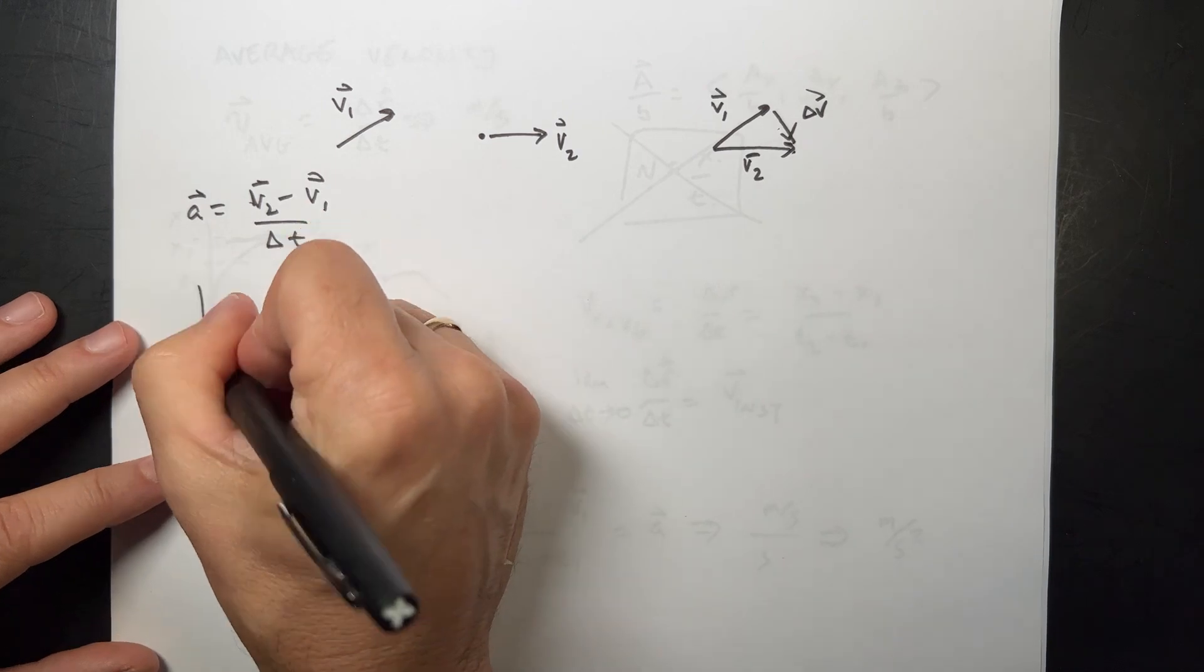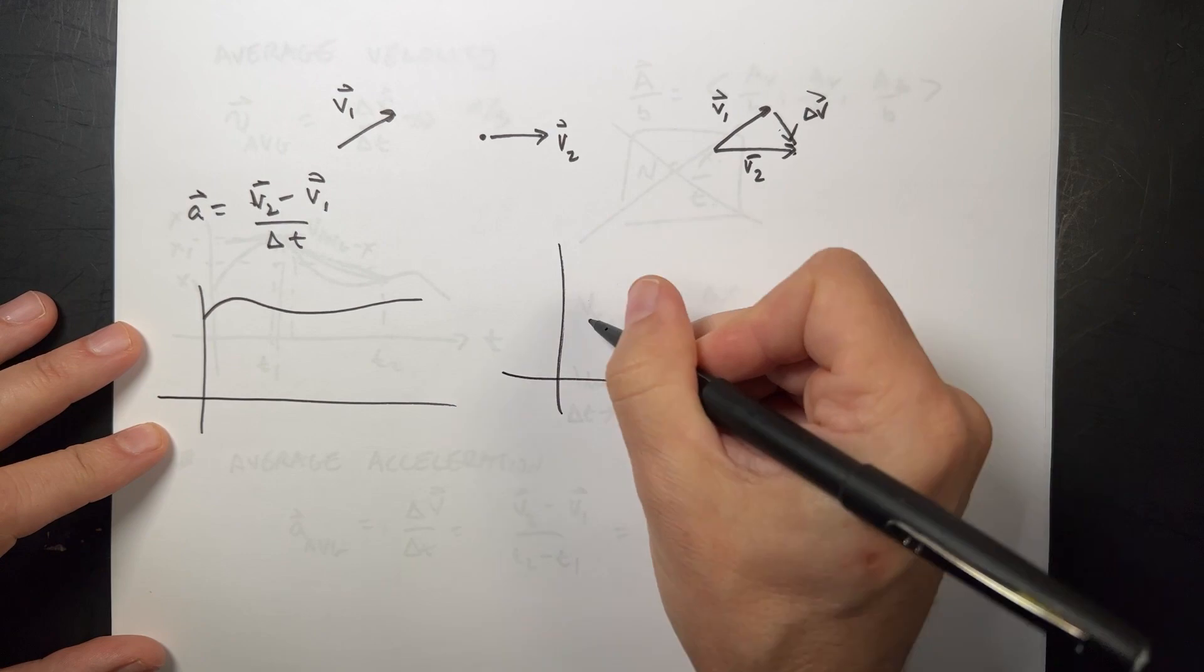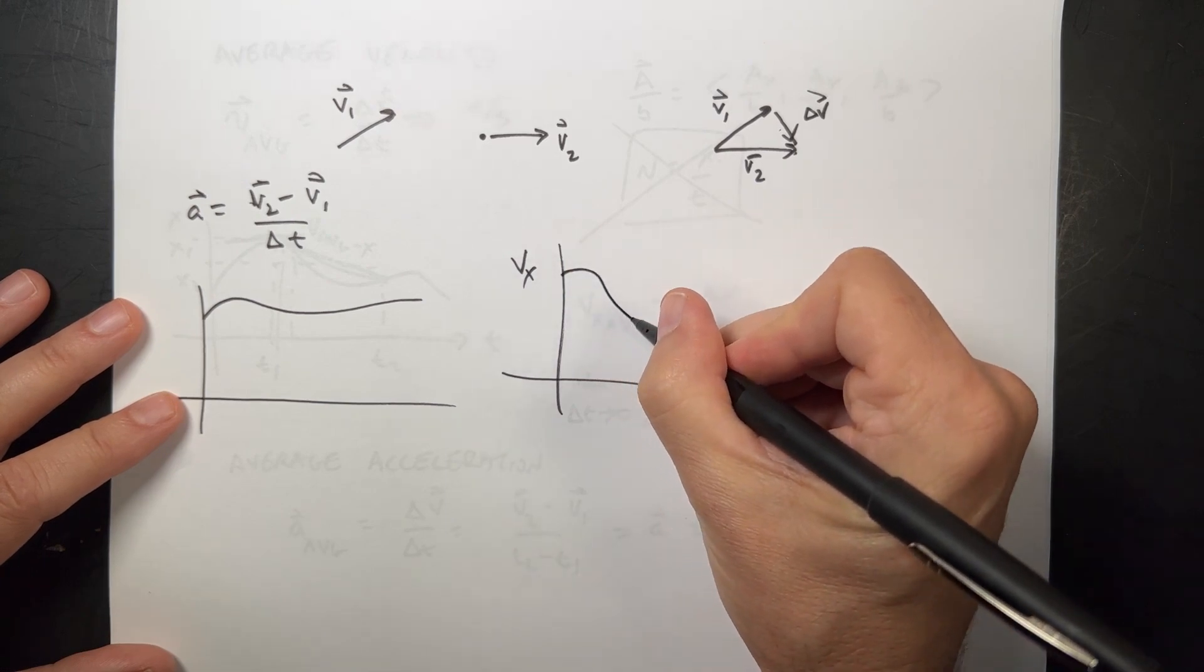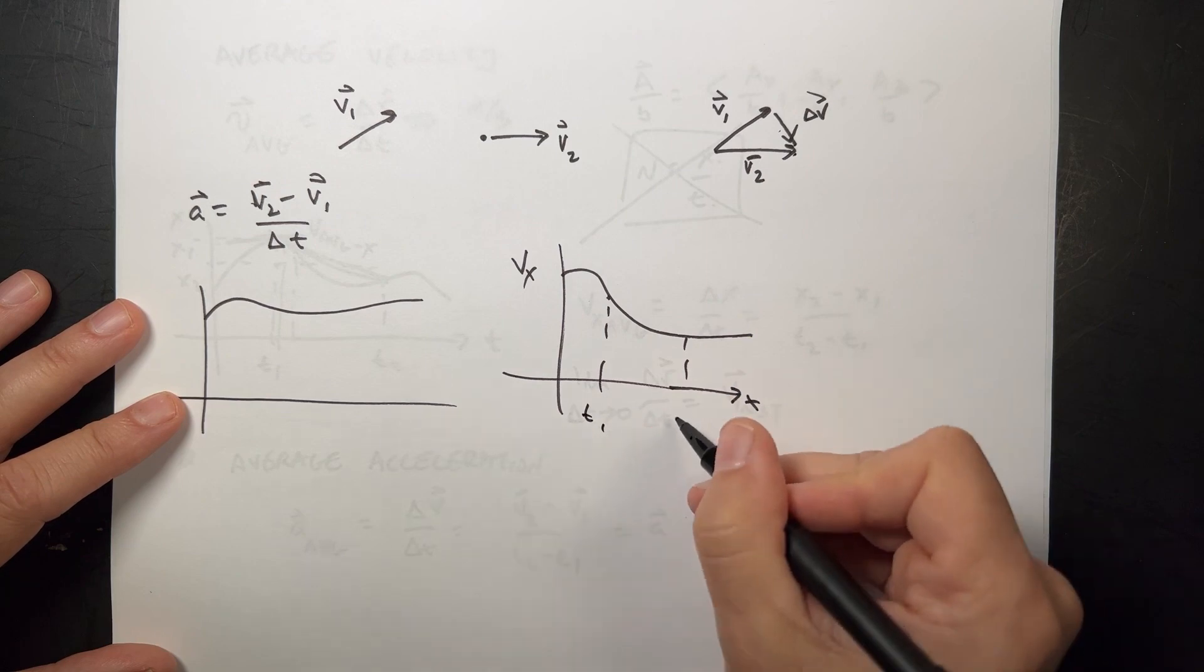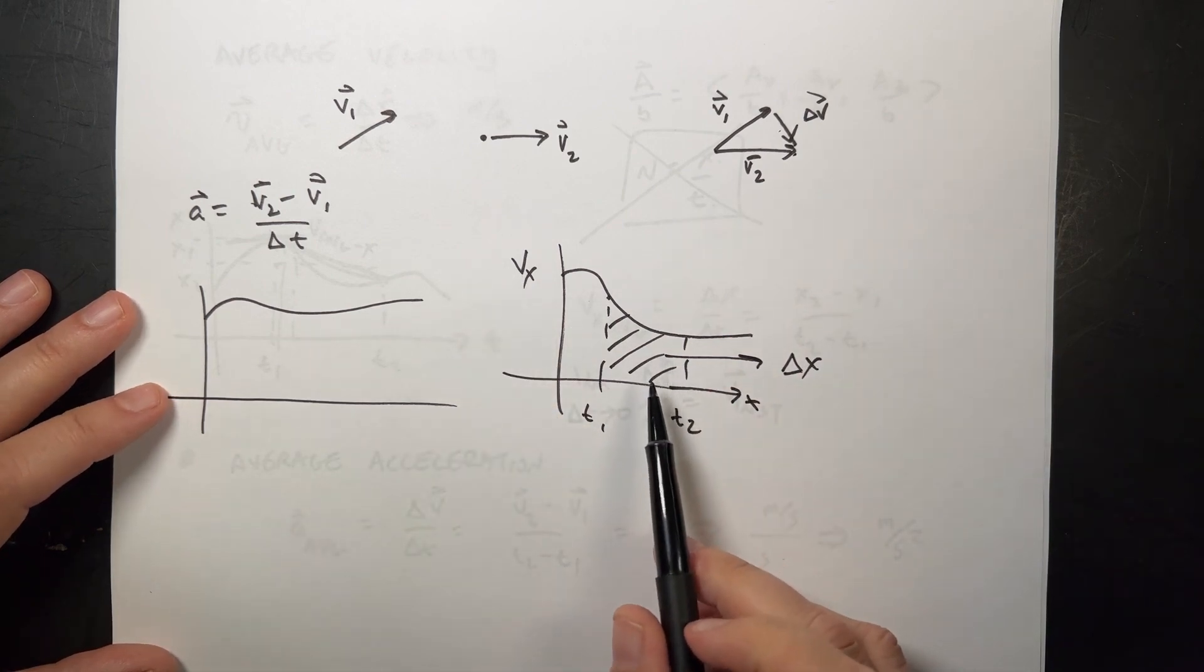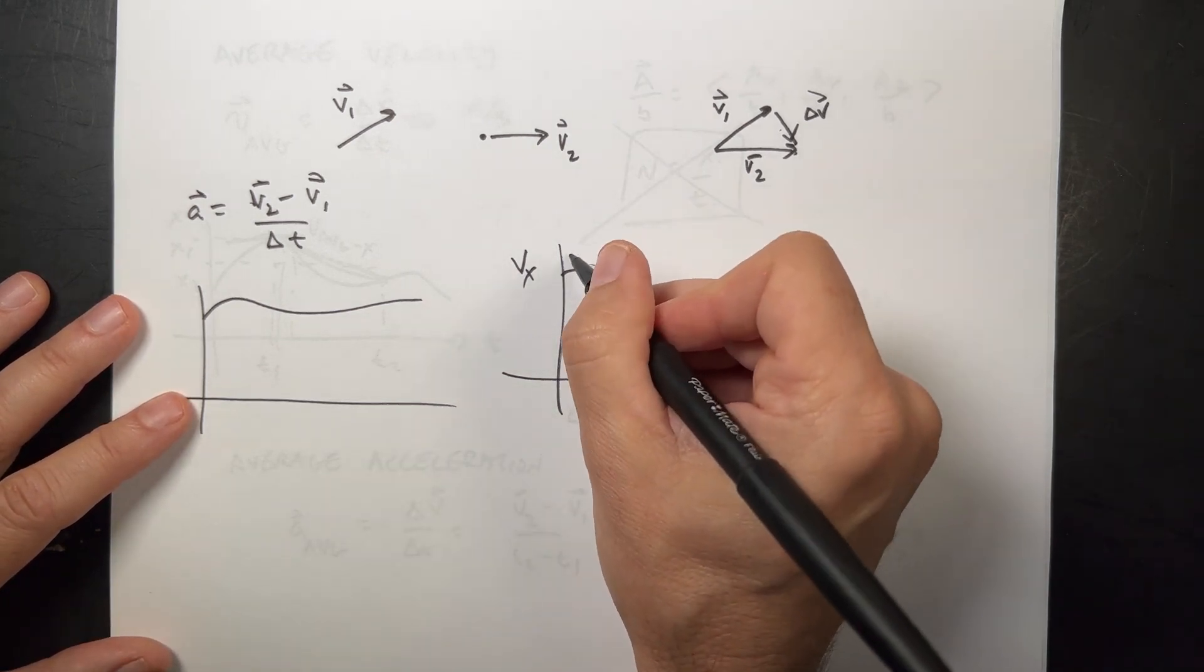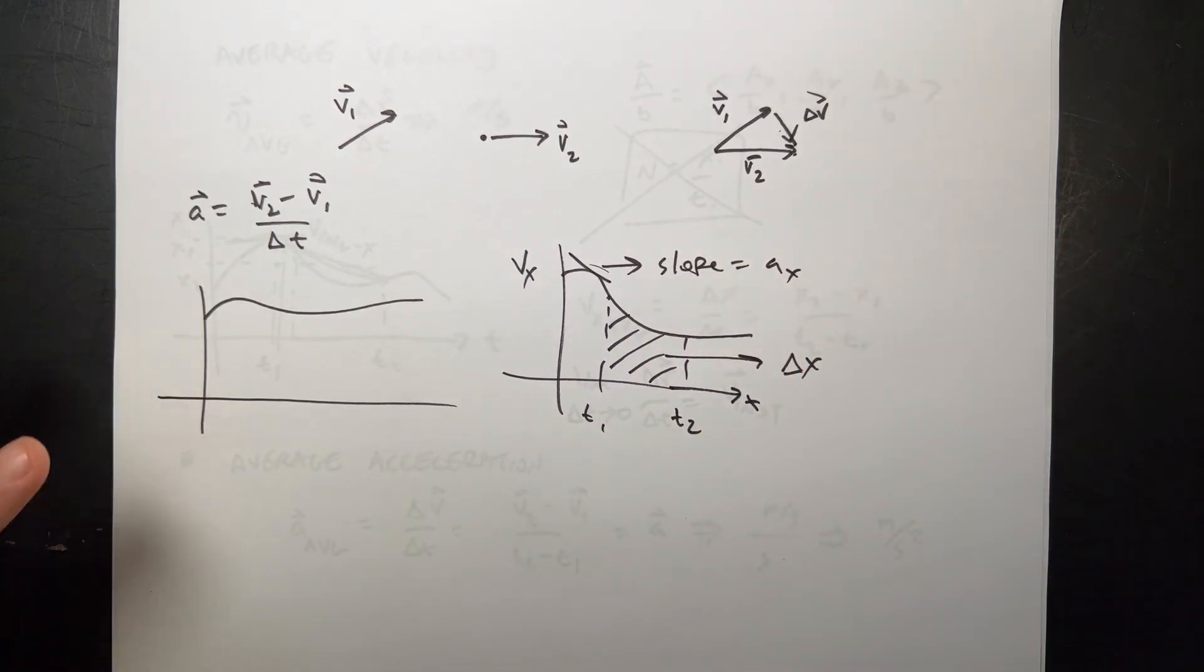If I have a velocity Vx as a function of time graph, and it goes like this, then if I look at from T1 to T2, the area under this graph is delta X. That's how far it moved in the X direction. The slope of this line is the acceleration in the X direction.